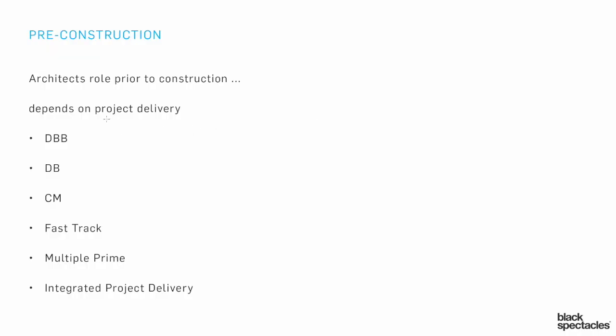For construction administration, the first question we have is: what is the architect's role during the construction process? You can't really have that discussion without also simultaneously thinking about project delivery — what system of delivery is the project going to use? Is it the classic design-bid-build, where the owner, architect, and GC each have their contracts with the owner, with consultants around the architect and subs around the GC?